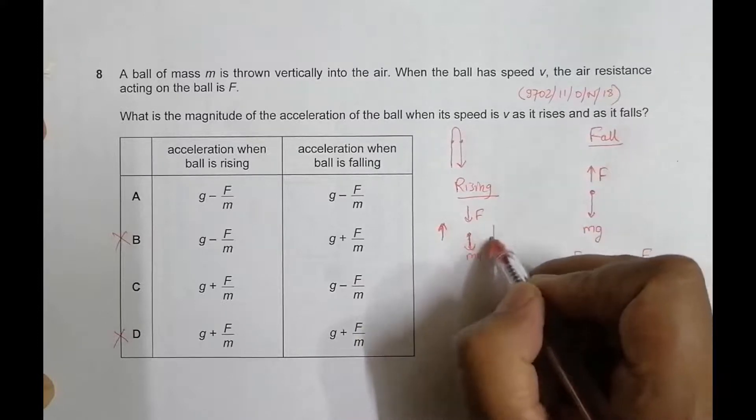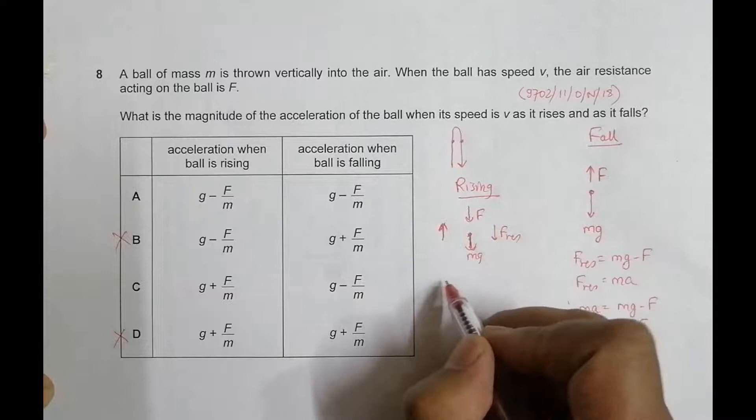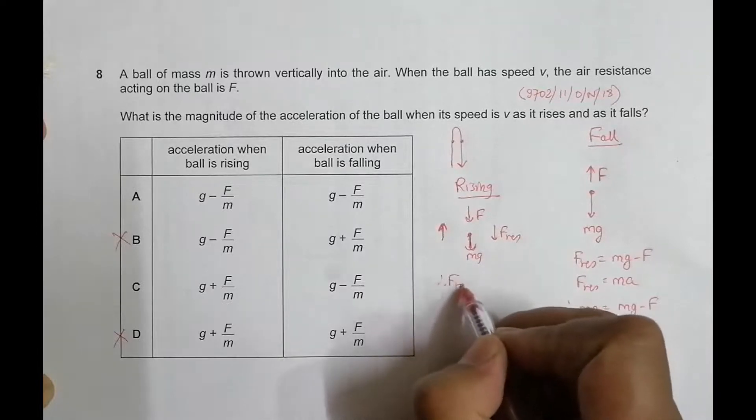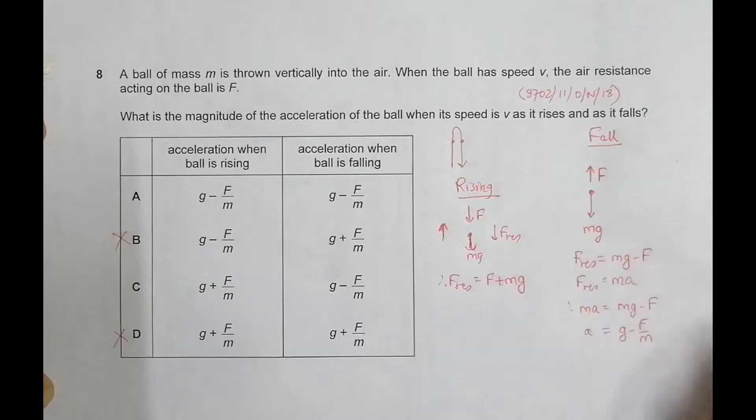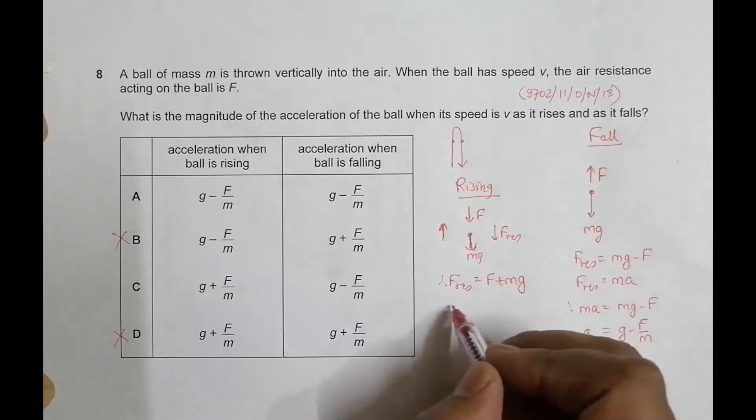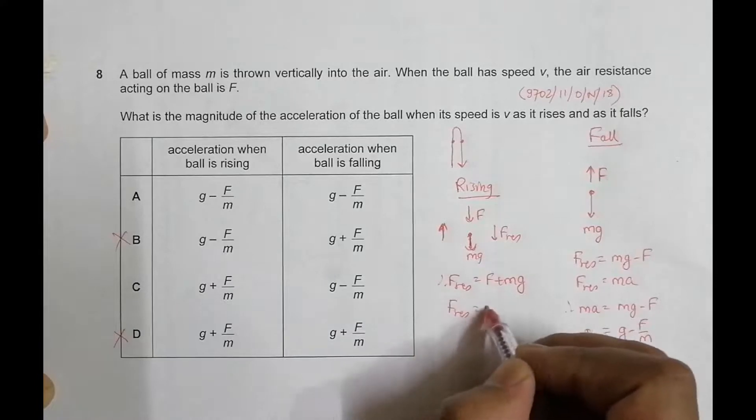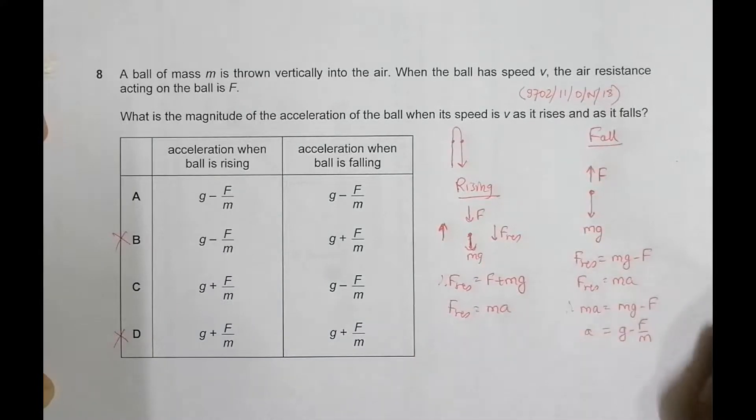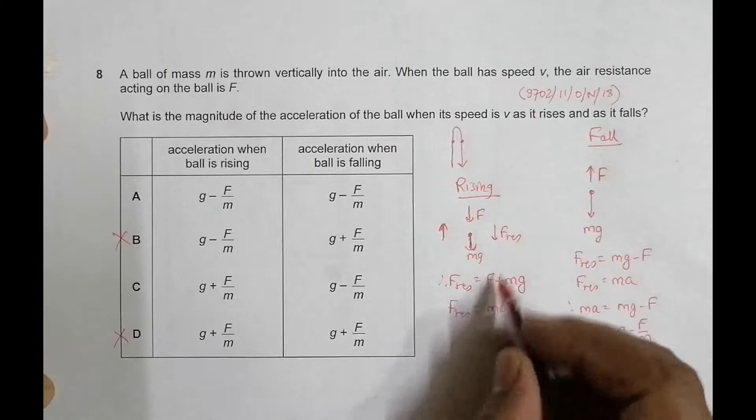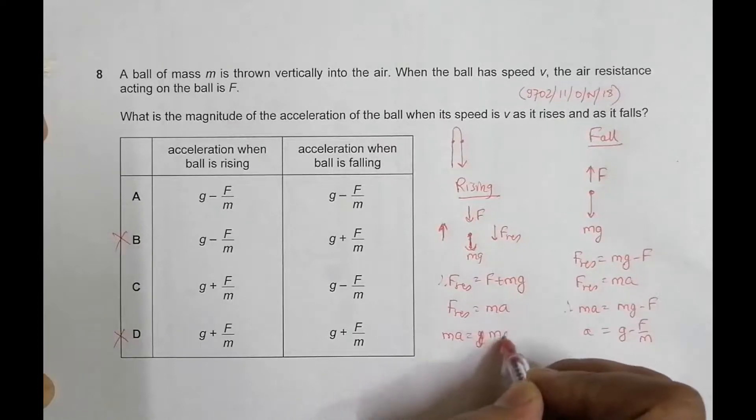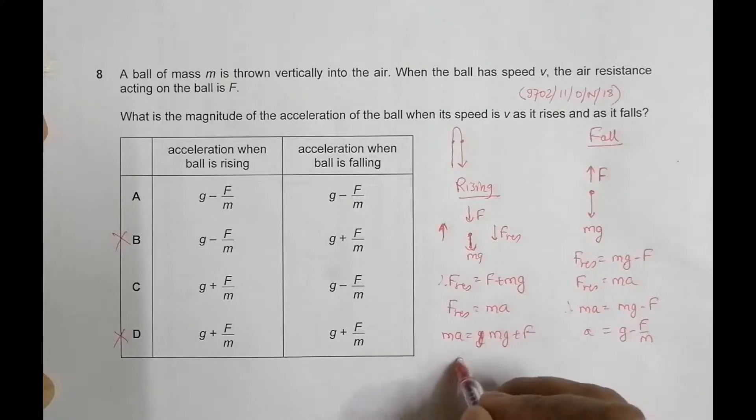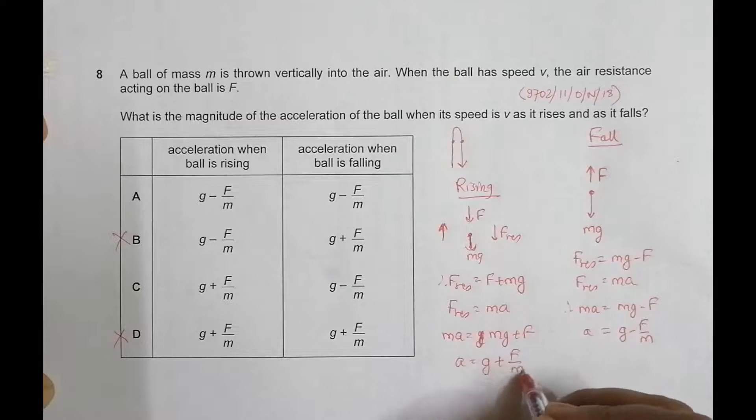So therefore the resultant force here will be equal to F plus Mg and this should be acting downward. So again this F_R should be equal to mass into a. This acceleration is again downward. So when we equate them we have Ma is equal to Mg plus F.